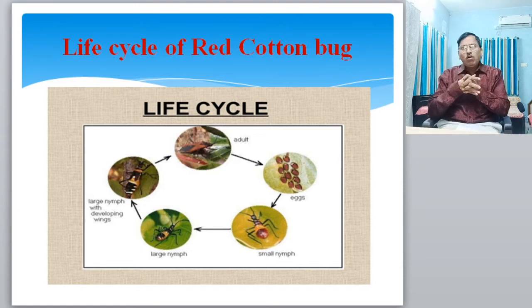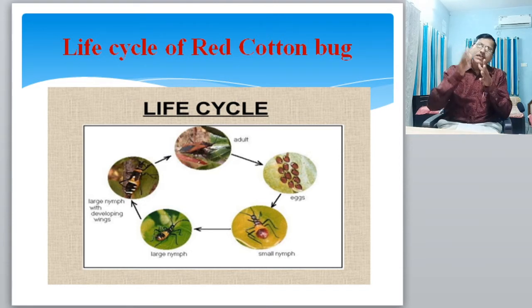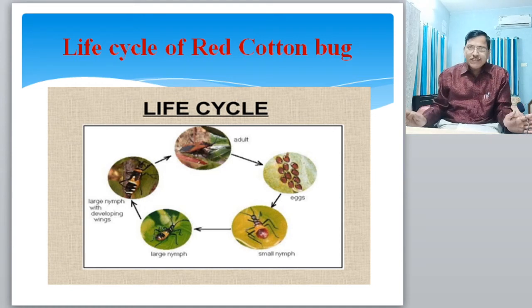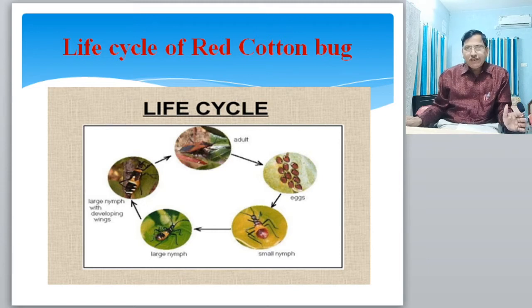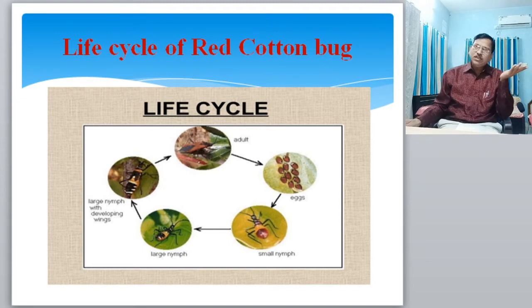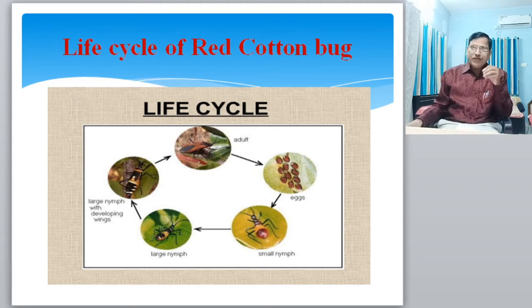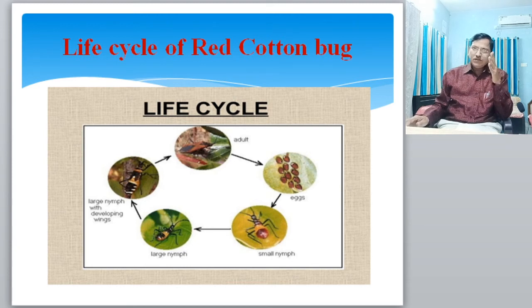The newly hatched nymph is pale brown with a pair of long wax-covered processes. The nymph grows by sucking sap from leaves, passing through 5 instars in 20 to 30 days. The average lifespan of an adult female is 6 to 8 weeks and the male is 4 to 6 weeks. The adult red cotton bug is similar to the nymph but the nymph is wingless and immature, while the adult has complete maturation and fully developed wings.